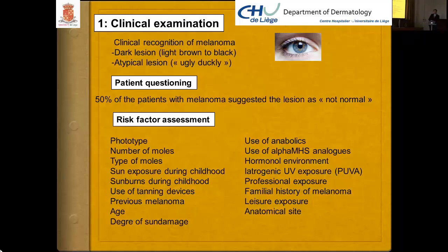Risk factor assessment includes photo types, number and type of moles, sun exposure during childhood, sunburn, tanning device use — the second most important risk factor — previous melanoma, increasing age, degree of sun damage, use of antibiotics, alpha-MSH analogs, hormonal environments, psoralen, professional exposure, family history of melanoma, and light strip exposure.